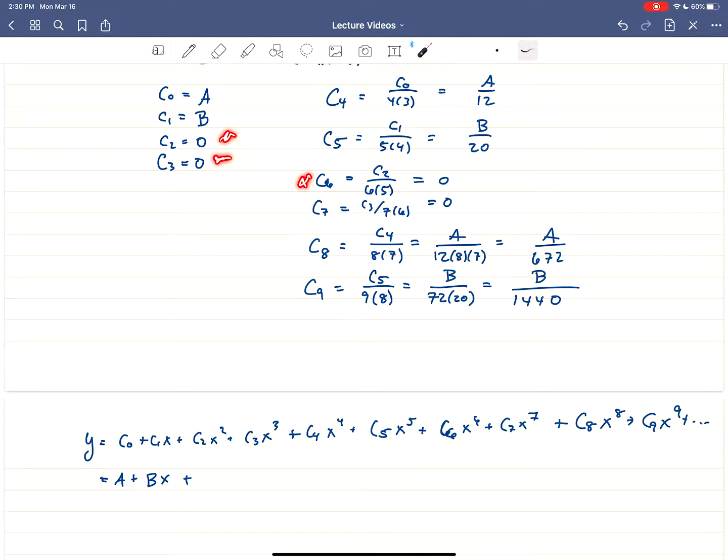While I'm thinking about it, c₆ and c₇ are 0. So that means that c₂, c₃, c₆, c₇ are all gone. And the rest of the values, let's see. The next value we're going to have is c₄, so that's A over 12x to the 4th, c₅ is B over 20x to the 5th, c₈ is A over 672x to the 8th, c₉ is B over 1440x to the 9th, and so on. So we're going to split this up into two functions.